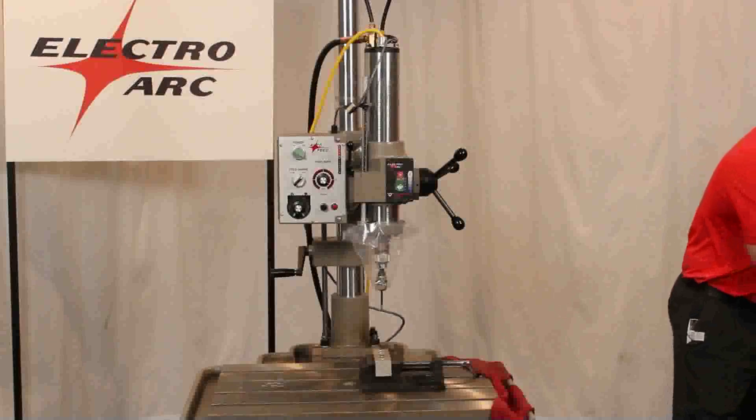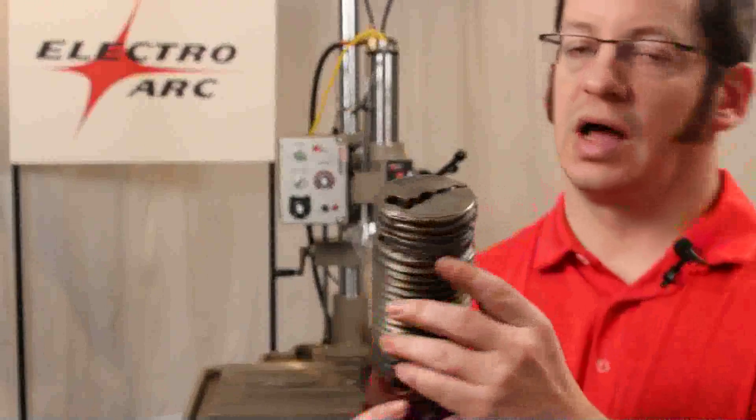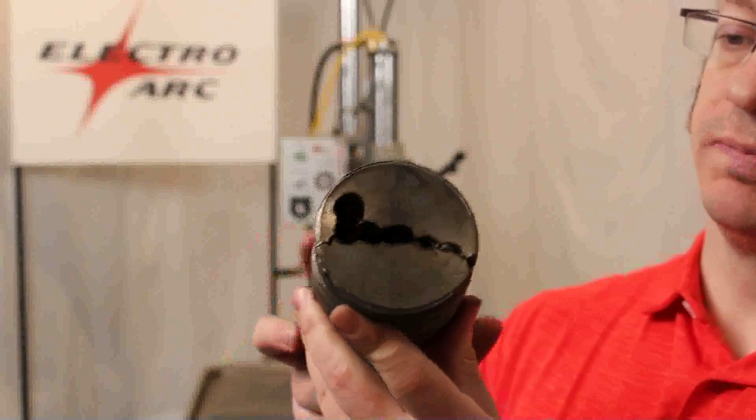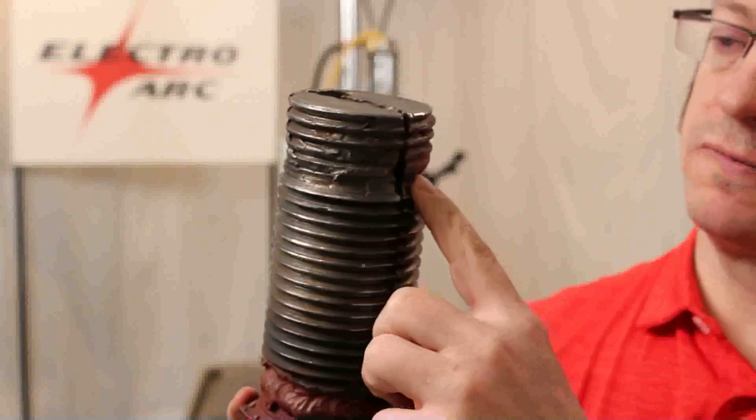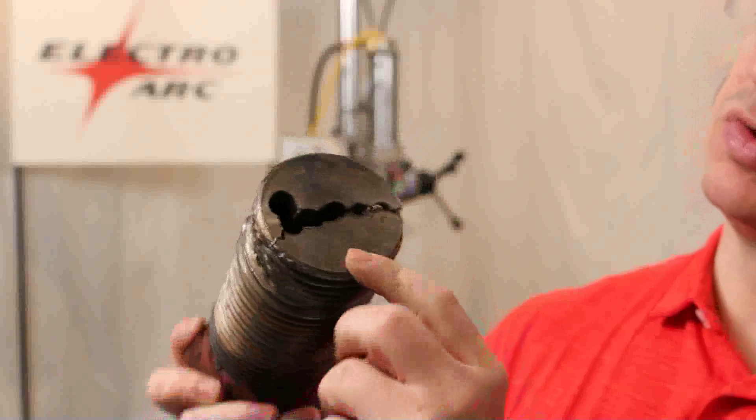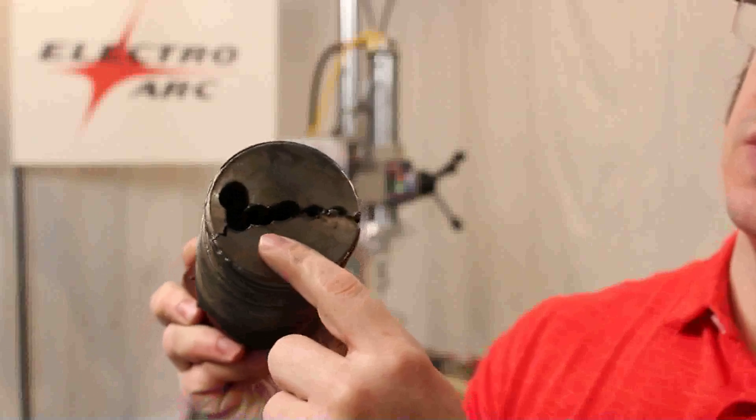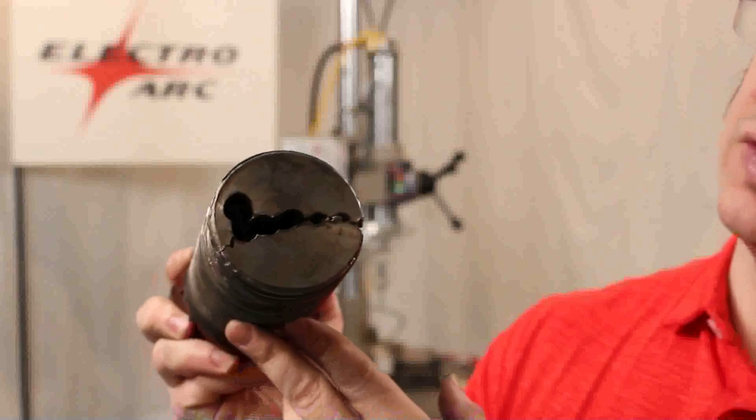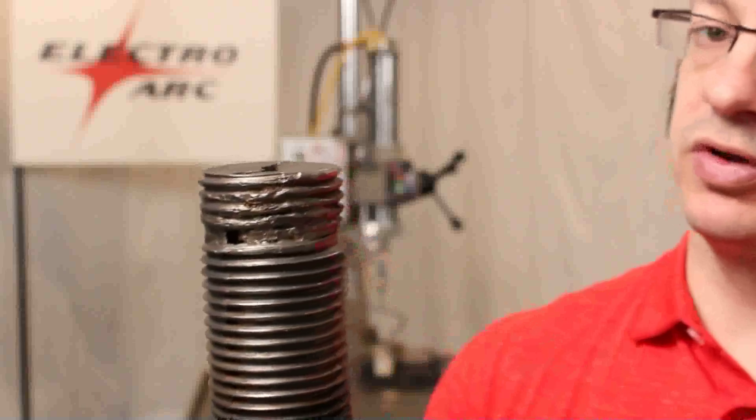Our machines have a very wide range of capability. Here is a much larger example. As you can see, the threads were pretty well destroyed in here. We just used a smaller electrode, made a series of cuts to have a slicing action there, which relieved enough of the pressure that we were able to turn it out.